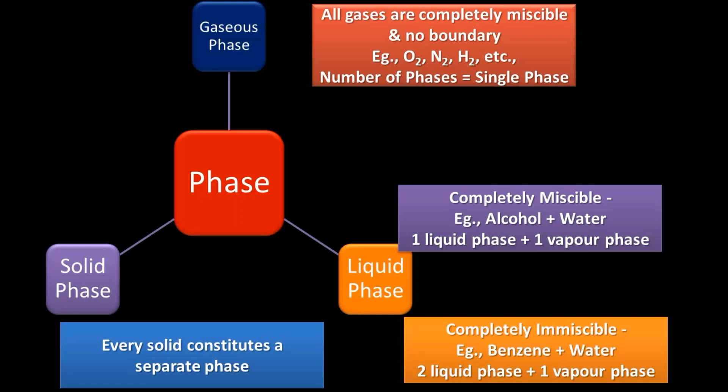Now, how do we identify phases for all states? For the gaseous phase — all gases mix together and become one. Even if we mix more gases, everything is available as a single phase. For example, our atmosphere has nitrogen, oxygen, helium, carbon dioxide, and other rare gases, but these gases have no well-defined boundaries individually; they all exist together as a single phase. So any number of gases given will be counted as a single phase.